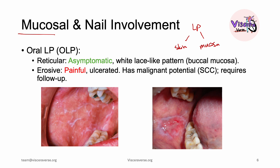Here we're going to discuss oral lichen planus. It has two forms: the reticular and the erosive form. The reticular form, as shown in this picture, is asymptomatic with a white lace-like pattern, and typically presents on the buccal mucosa. The erosive form is more serious — not only is it painful, but there is also a malignant potential. That's why whenever we see such patients, we want to require follow-up.